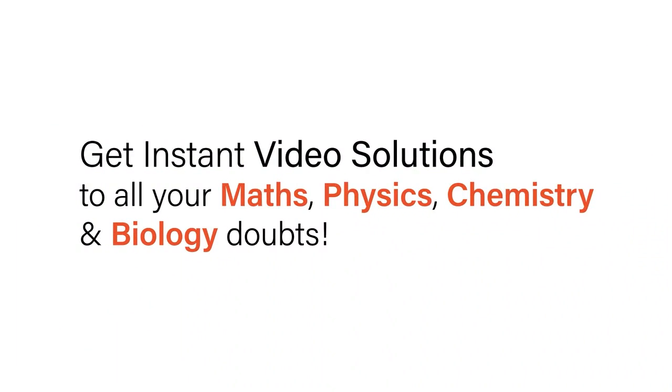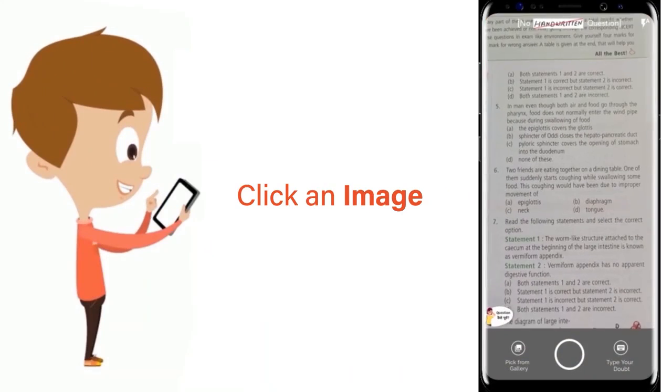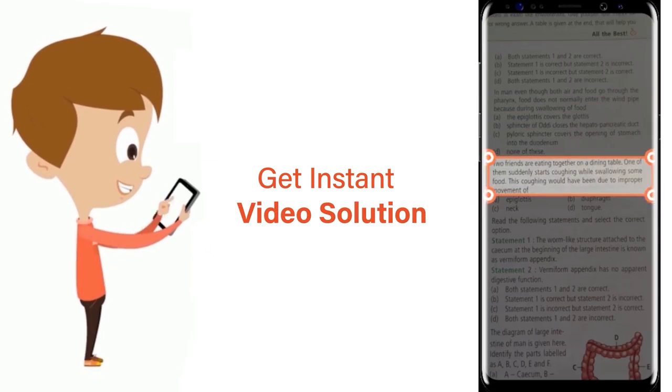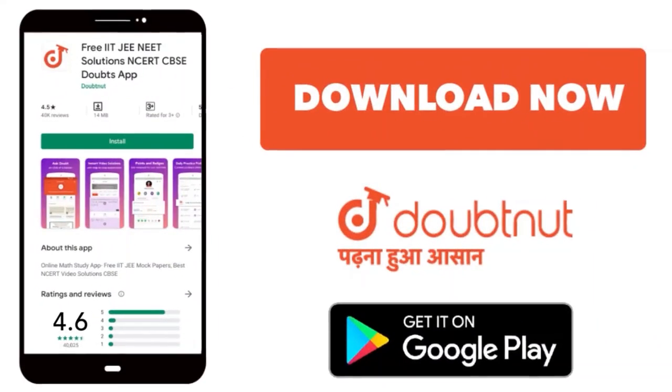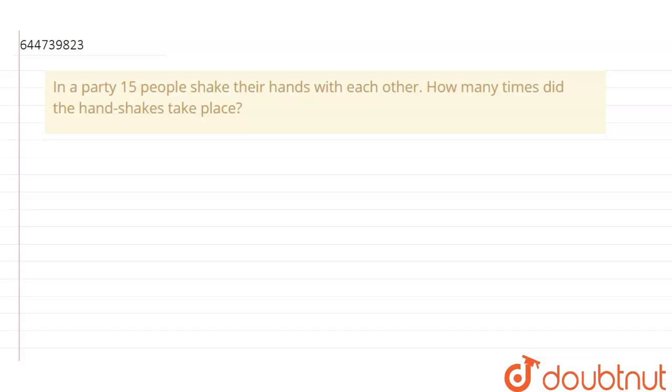With Doubtnet, get instant video solutions to all your maths, physics, chemistry, and biology doubts. Just click the image of the question, crop the question, and get an instant video solution. Download Doubtnet app today. So today our question is: in a party, 15 people shake their hands with each other.